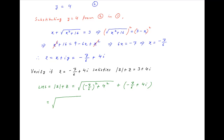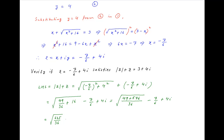This is equal to the square root of 49 upon 36 plus 16, minus 7 upon 6 plus 4i, which is equal to the square root of 49 plus 576 divided by 36, minus 7 upon 6 plus 4i, which is equal to the square root of 625 upon 36, giving 25 upon 6, minus 7 upon 6 plus 4i. And this is equal to 18 upon 6 plus 4i, which simplifies to 3 plus 4i, which is the right-hand side of the given equation.